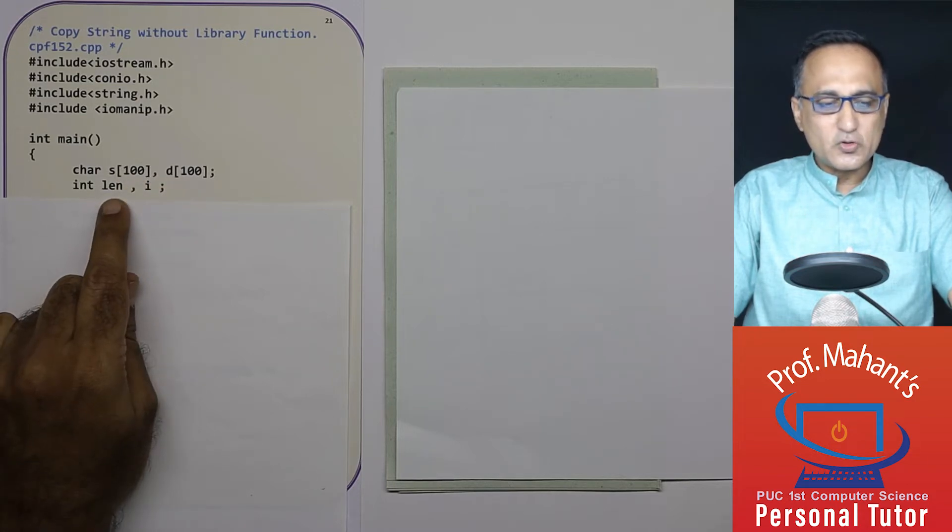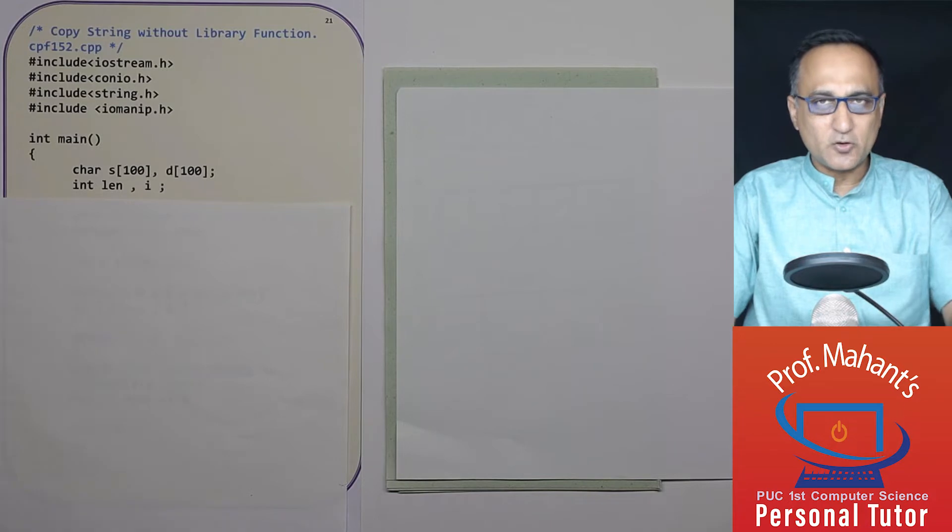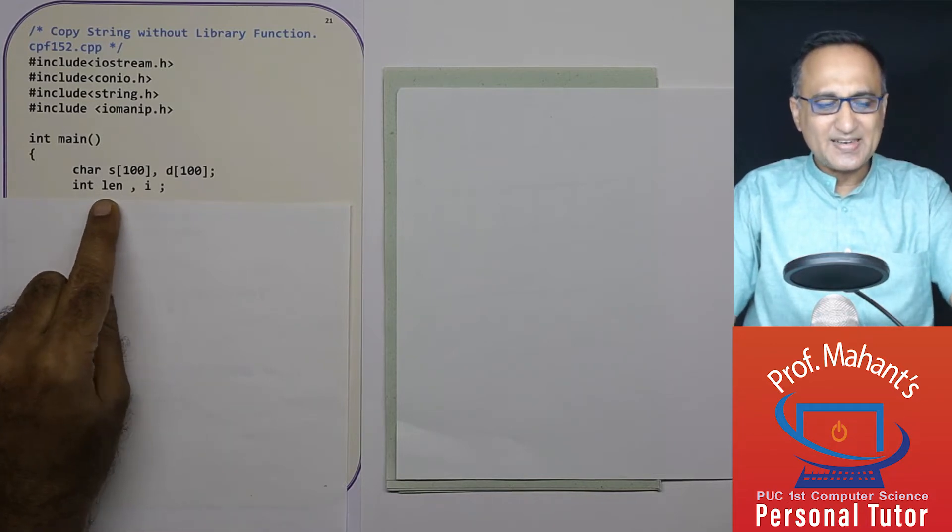Length is used to calculate the length of string s and i is a variable which is used to transfer characters from here to here from the zero position until its value is less than length.